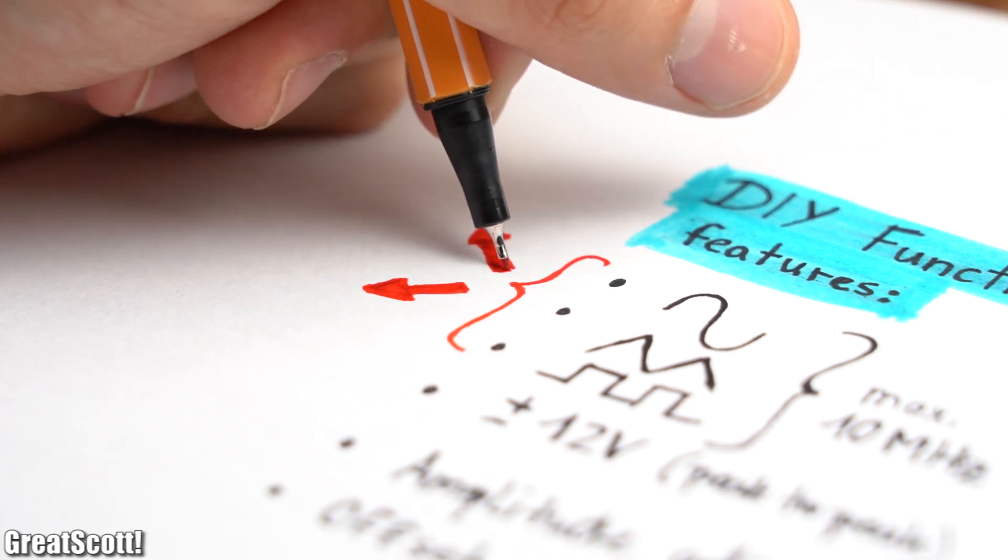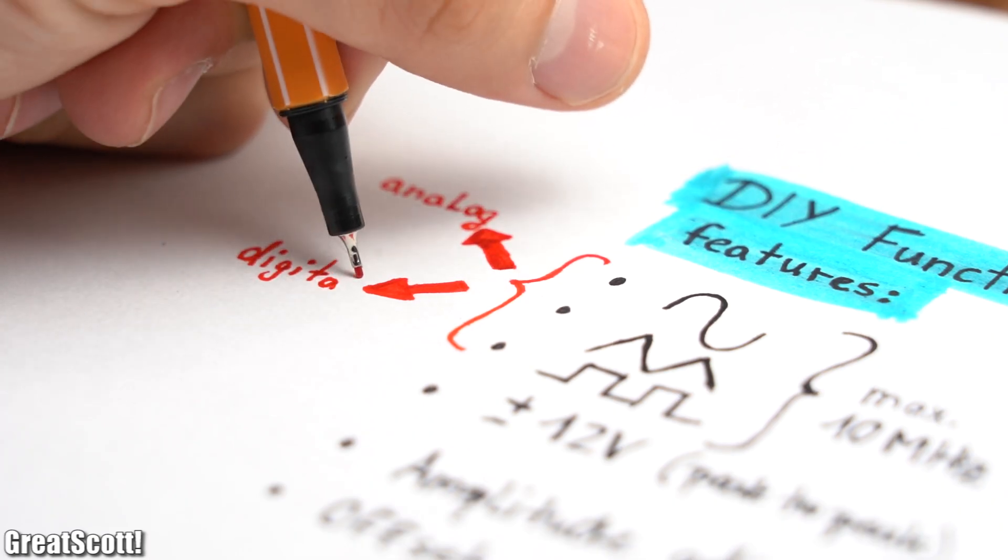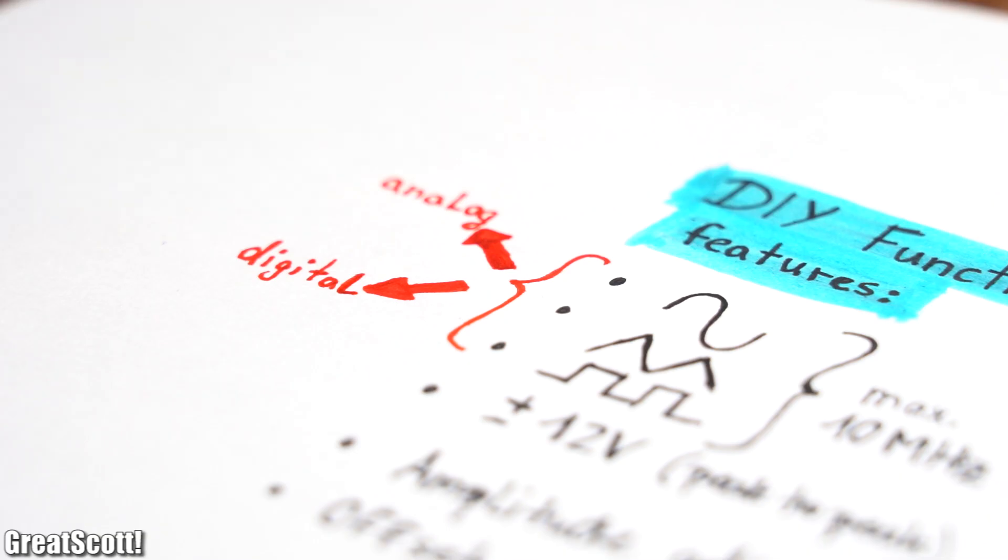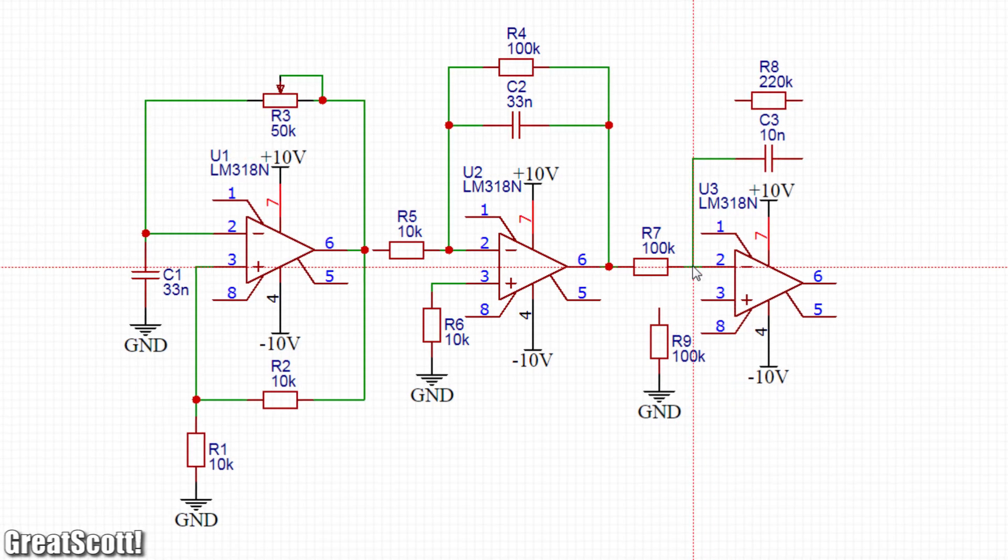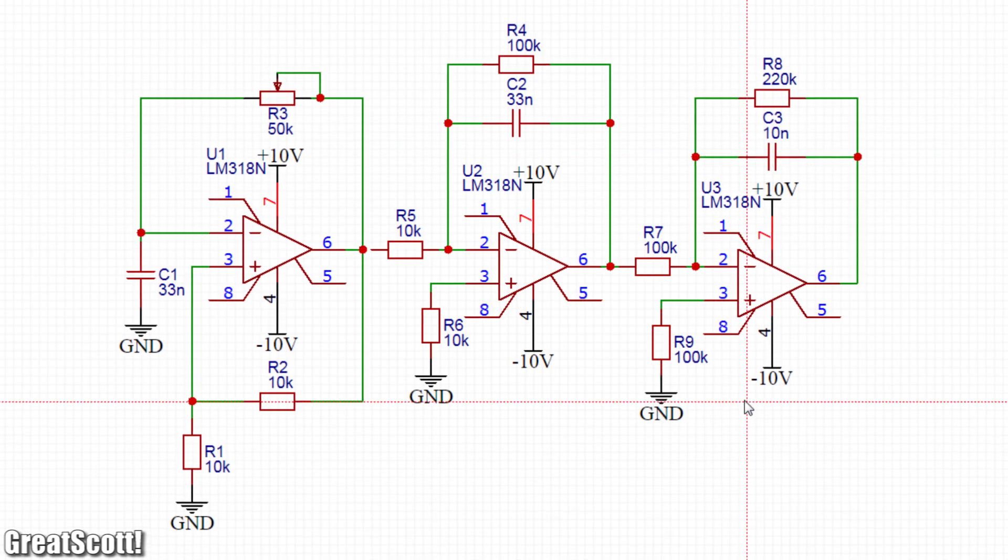So let's think about creating the different waveforms, which brings us to the problem whether we should go the analog or digital route. If we would go analog, then a simple op-amp configuration like this can be found everywhere on the Internet.